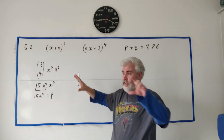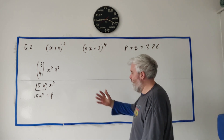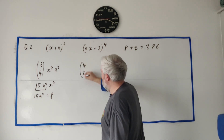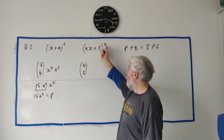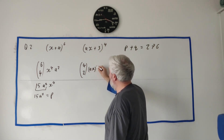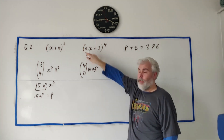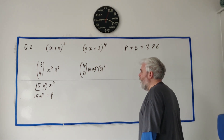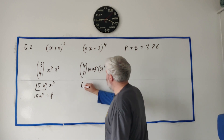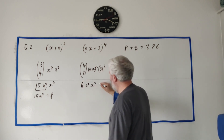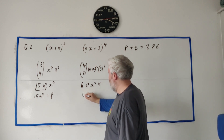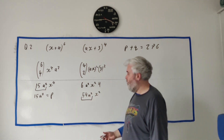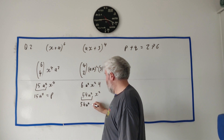Doing the same thing for the second expression, we want the coefficient of x squared and there are four total terms, so we use 4 choose 2. The first term is ax, so it's (ax)^2, and the remaining power gives a factor of 3^2, which is 9. 4 choose 2 is 6, so we have 6 · a² · x² · 9. Multiplying 6 by 9 gives 54, so the coefficient of x squared is 54a², which equals q.